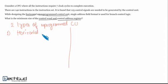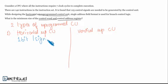Horizontal microprogrammed control unit versus vertical microprogrammed control unit. Basic difference lies in the number of bits used for signals. Here one bit per signal is assigned.